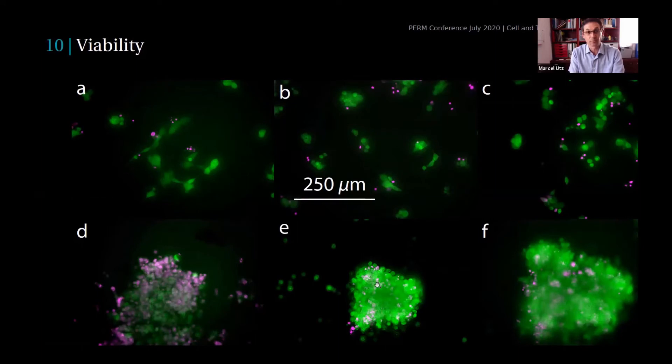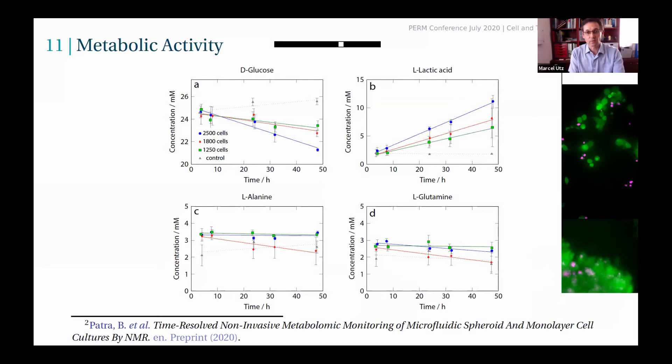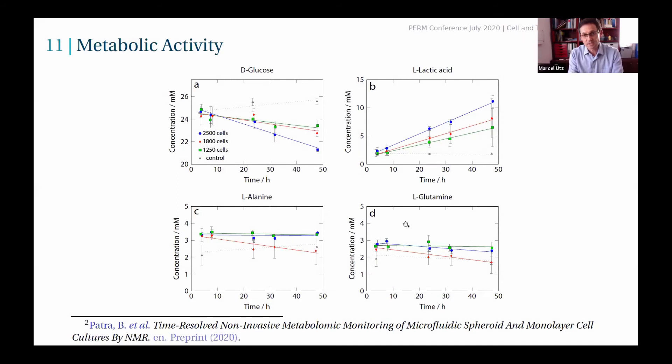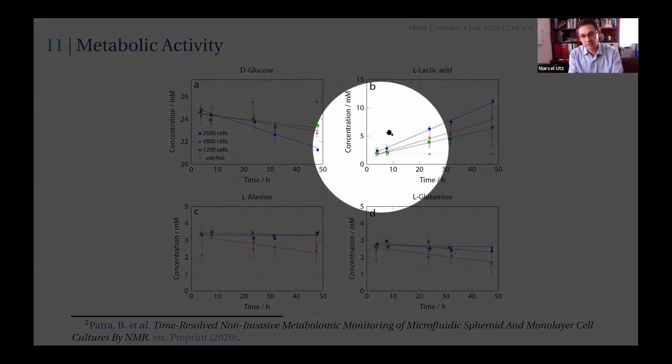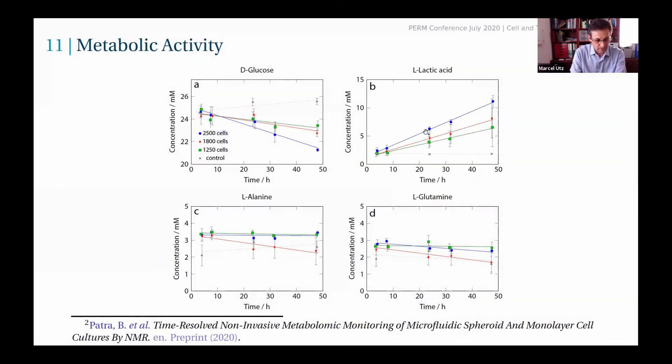We can get quantitative information on various metabolites, for example glucose and lactic acid, but also others like alanine, glutamine, and so on. You can see from the error bars here that we can work with kind of millimolar concentrations. I forgot to mention the sample chamber in these chips is about two and a half microliters, so about a hundred times smaller than a conventional NMR sample tube.